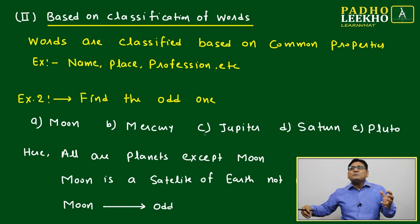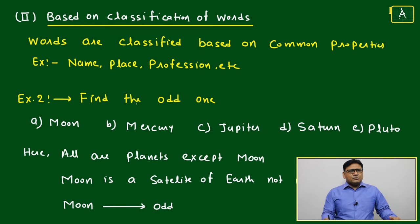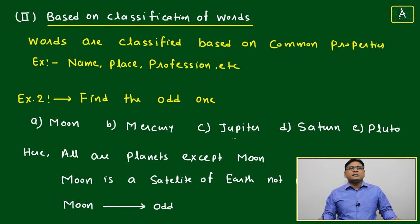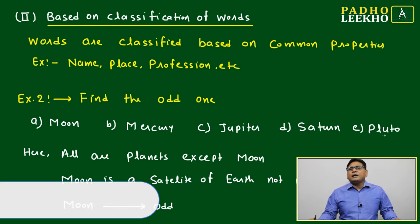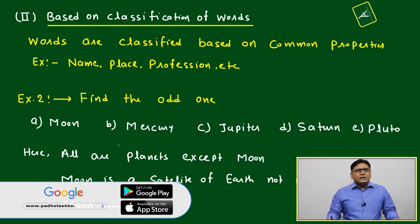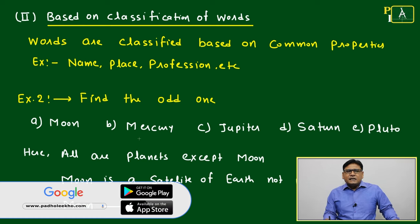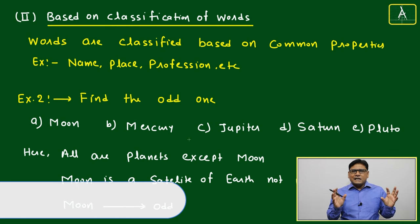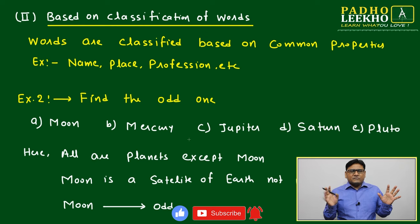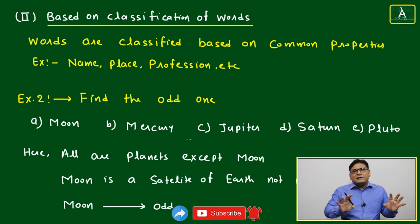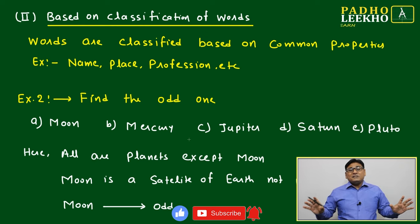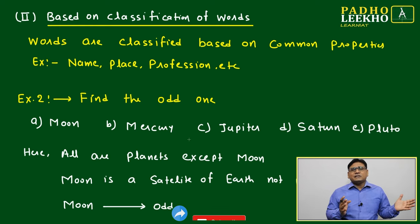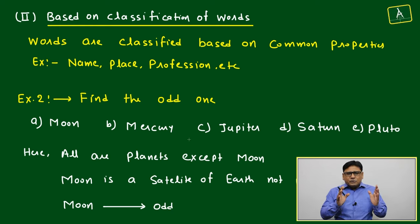Let's check one example. The options given are: moon, mercury, jupiter, saturn, and pluto. What is the similarity among all five? All five are heavenly bodies — there is no doubt. So based on that, all five are similar, and nothing appears odd at first glance. Let's go further.